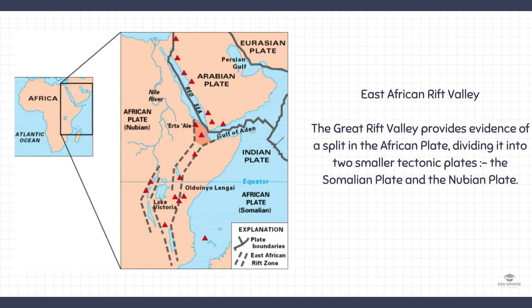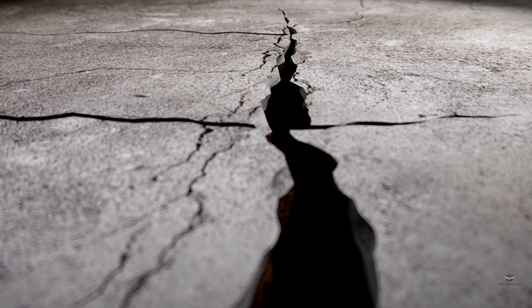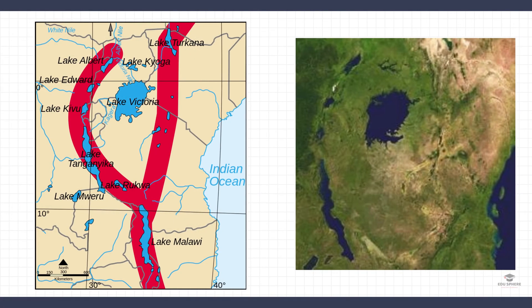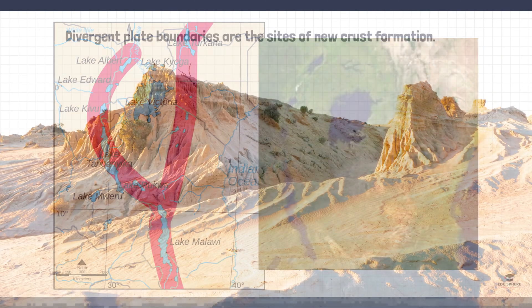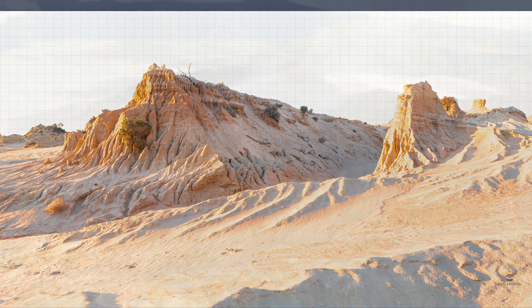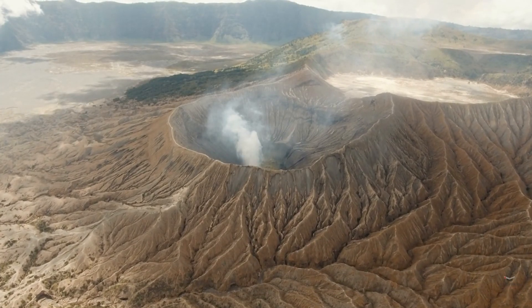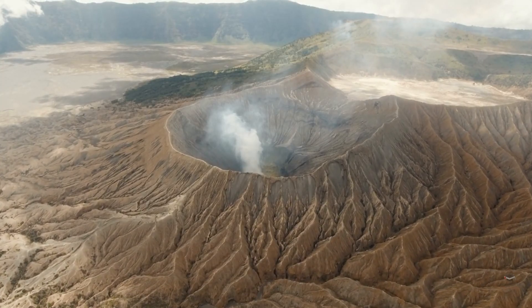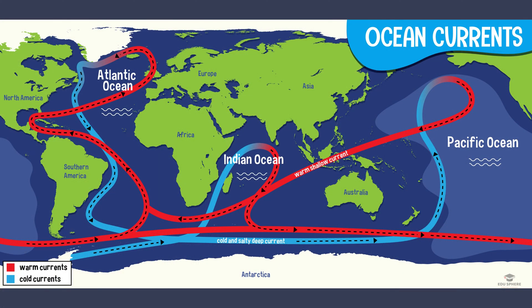However, divergent boundaries can also be found on land, such as in the East African Rift Valley. The Great Rift Valley provides evidence of a split in the African plate, dividing it into two smaller tectonic plates: the Somalian plate and the Nubian plate. Divergent plate boundaries are important because they are the sites of new crust formation, active volcanism which can release gases and nutrients into the atmosphere and ocean, and they play a role in the formation of ocean currents and climate patterns.